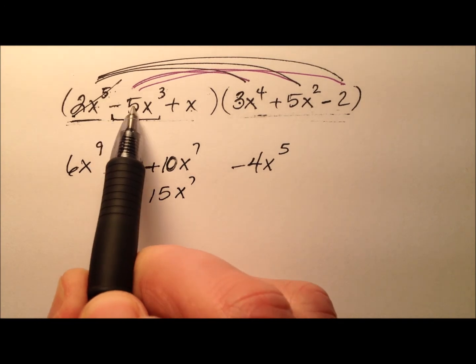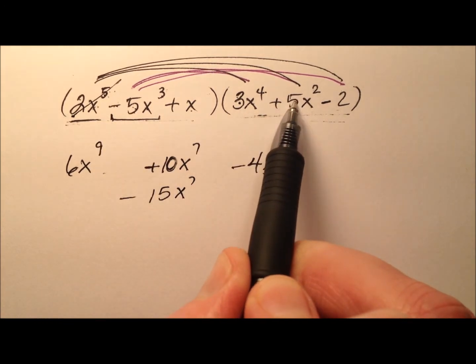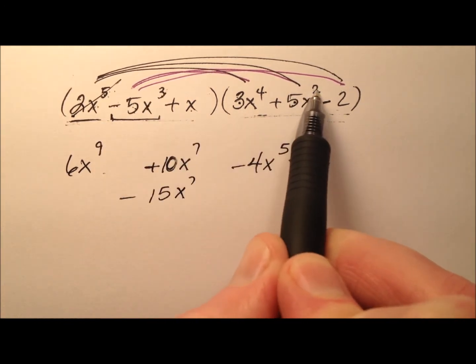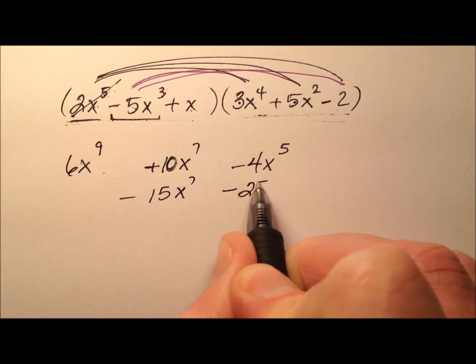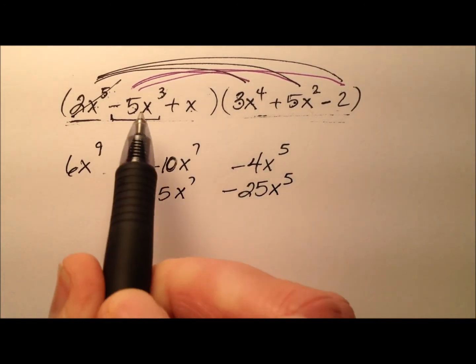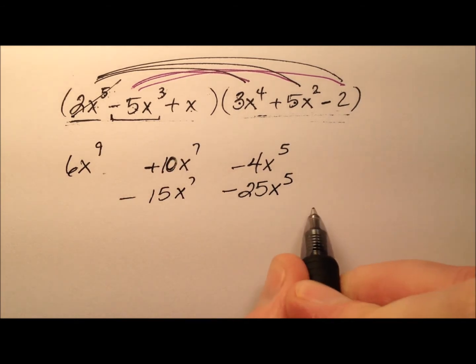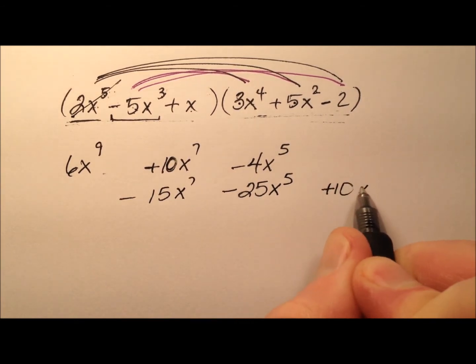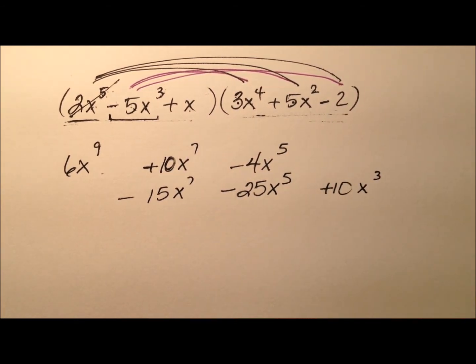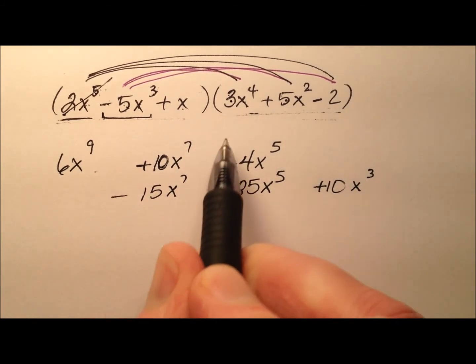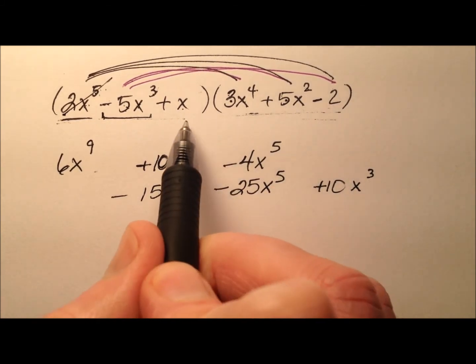And then we have negative 5 times 5, which is negative 25, and then x cubed and x squared, so negative 25x to the fifth. Okay, and finally, negative 5 times negative 2 is positive 10, and the x cubed comes along for the ride. Okay, so it seems like we might not have needed those spaces, but that's okay.